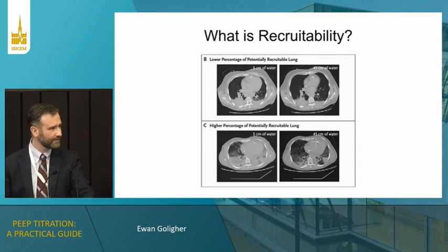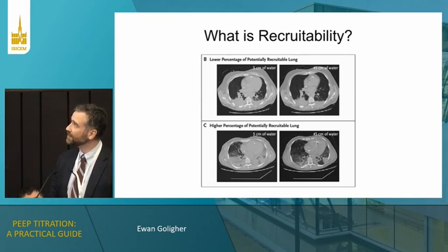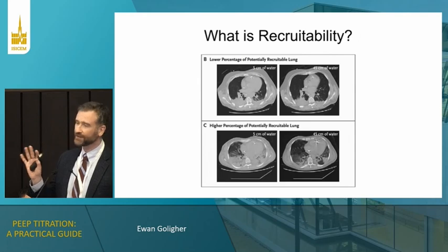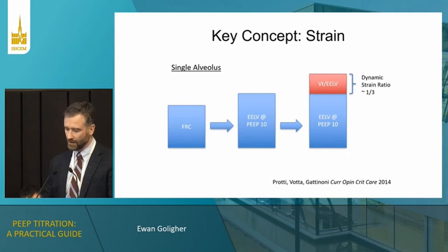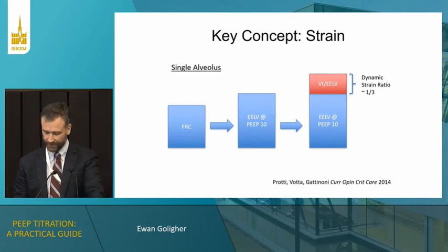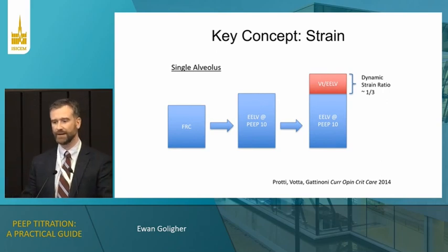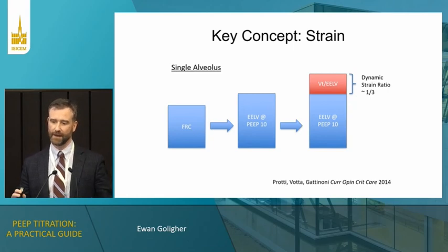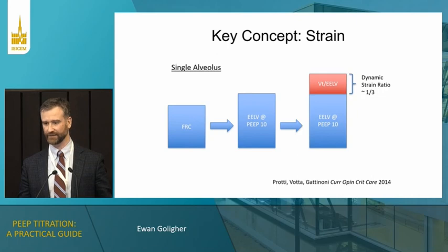Of course, we're not doing CTs most of the time to set PEEP, so the question is how to have an assessment like this at the bedside. The critical concept I want you to visualize when thinking about setting PEEP is the idea of strain. Strain is basically the change in size of a lung unit in response to tidal inflation as a function of its baseline size.